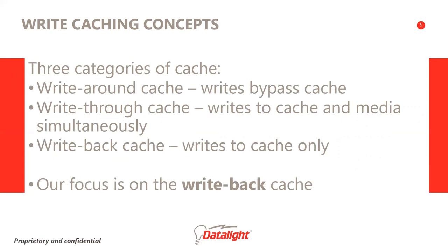Several of the buffering solutions we'll discuss are related to the Linux page cache. There are three broad categories. A write-around cache has writes bypass the cache entirely — the data is transferred straight onto the backing store, and a subsequent read results in a cache miss. A write-through cache copies written data into the cache but immediately transfers it to the backing store as well — the write does not indicate completion until the transfer is complete. A write-back cache copies written data into the cache and indicates completion immediately; dirty data is written to the backing store asynchronously or in response to a flush request.